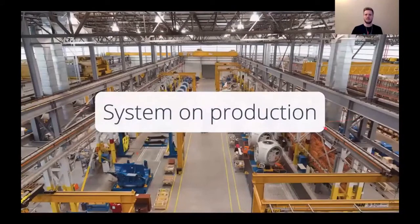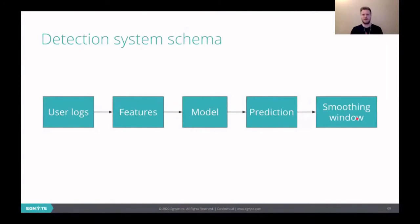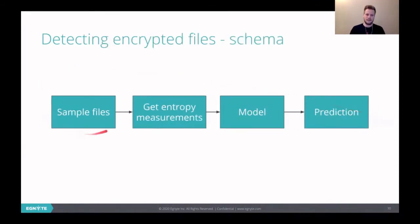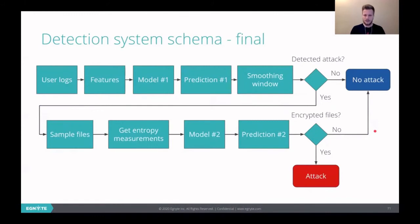So let's go to production. This is the first stage of our system. We take user logs, we calculate some features. Then the model, the random forest model, makes some predictions and the predictions are smoothed by the smoothing window. And then we have second stage, which detects encrypted files to ensure that if we want to report there actually is a ransomware attack. So we are sampling files, calculating those measurements, using our XGBoost model and have a prediction. So the whole system architecture looks like that.